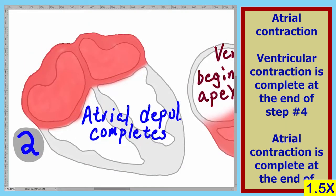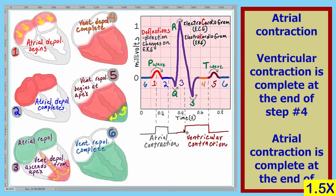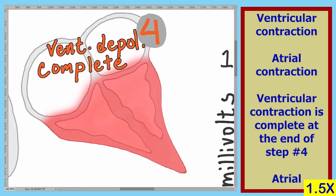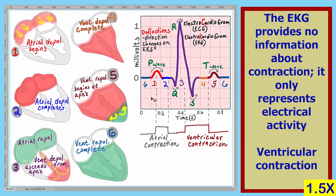Represented here is atrial contraction, which takes place at the end of step two, after the completion of atrial depolarization. Ventricular contraction is complete at the end of step four, after the completion of ventricular depolarization. Please keep in mind that the electrocardiogram, the EKG, says nothing about contraction — it only shows the electrical events that take place in the heart.